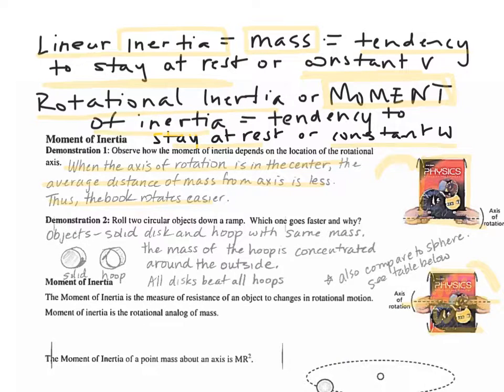Another way to explain this would be to say, when the axis of rotation is in the center, the average distance of the mass to the axis is less, thus the book rotates easier. The second demonstration we did in class: we had a solid cylinder and a hoop cylinder, and we rolled them down a ramp. What will happen every single time is that the solid cylinder will win every single time. The solid cylinder will be faster than the hoop. The reason for this is because of the way that the mass is distributed. In the hoop, the mass is distributed around the outside, and it's harder to turn. So all discs will beat all hoops.